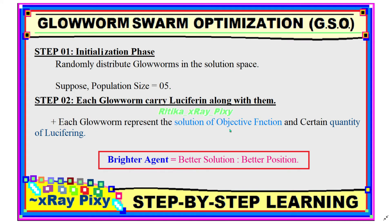In step one, this is the initialization phase. In this phase we initialize the population of glowworms in the solution space, randomly distributing the glowworms. Suppose we have five glowworms — we randomly distribute them in the solution space. Now the population is initialized.